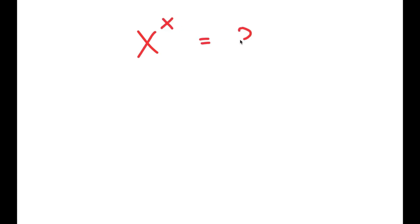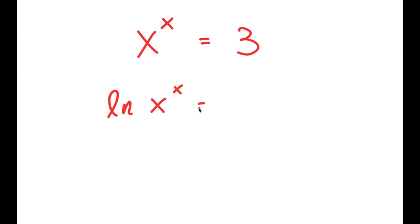Alright, so in this video I'm going to solve the equation x to the power of x is equal to 3. To solve this, I'm going to first start by taking the ln, or natural log, on both sides. So I get ln of x to the power of x is equal to ln of 3.